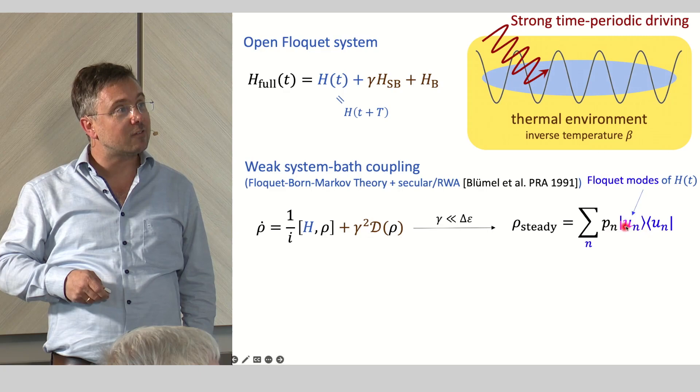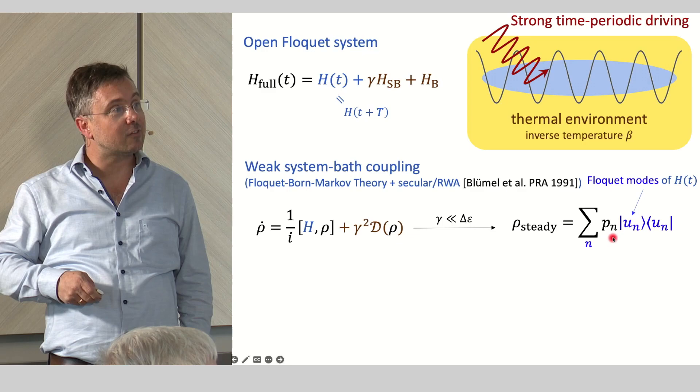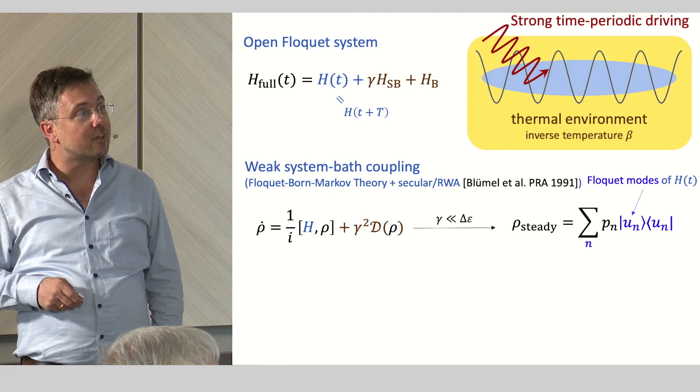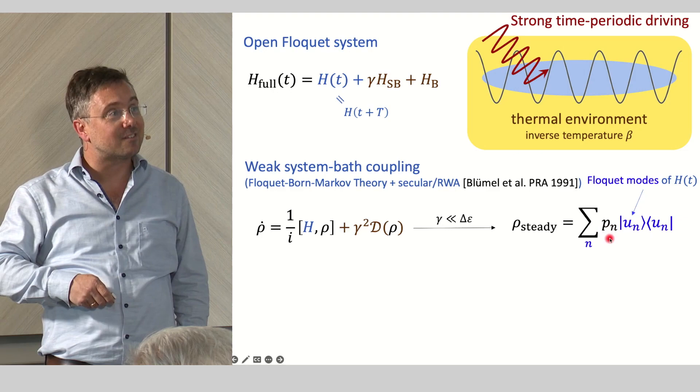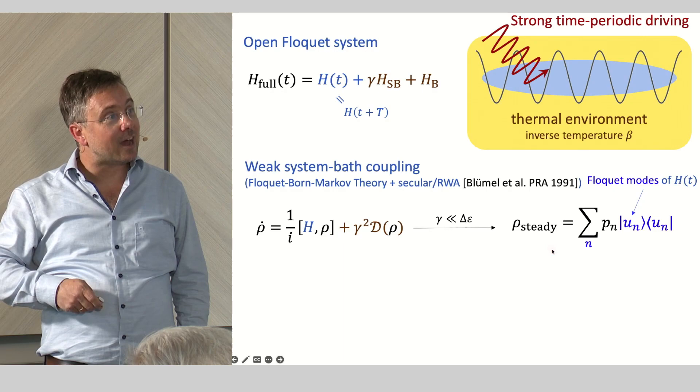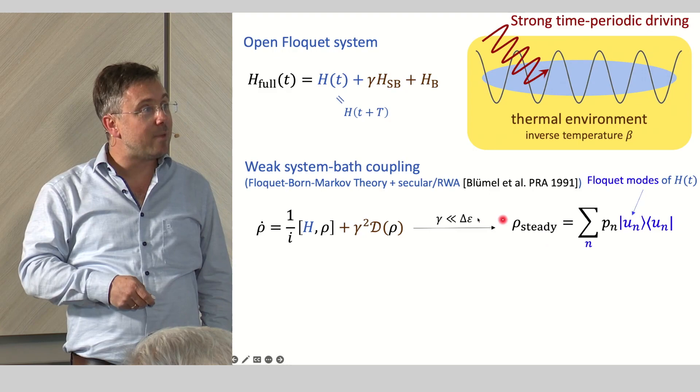Then the system approaches a steady state, the form of which we know already. It is diagonal with respect to the Floquet states with some probabilities weighting the different Floquet states. So it is time-periodic, a quasi-steady state in that sense. And why is this so? If this term here goes to zero, the state has to be an eigenstate of the first term. This is the most general steady state of the first term with respect to the Hamiltonian.